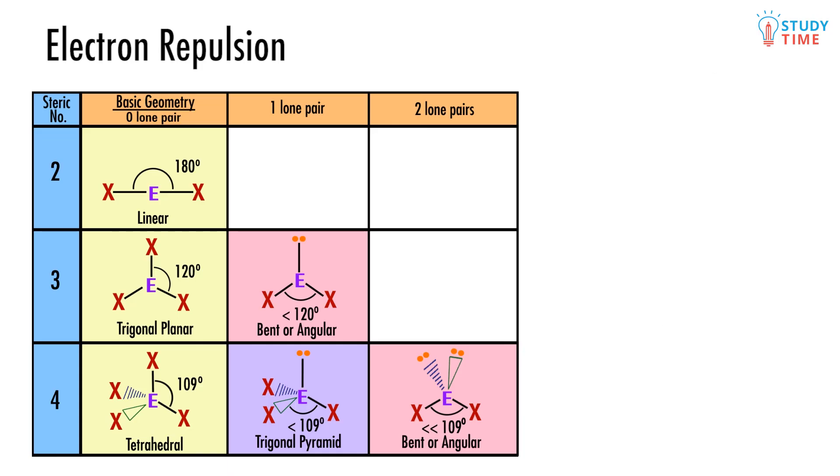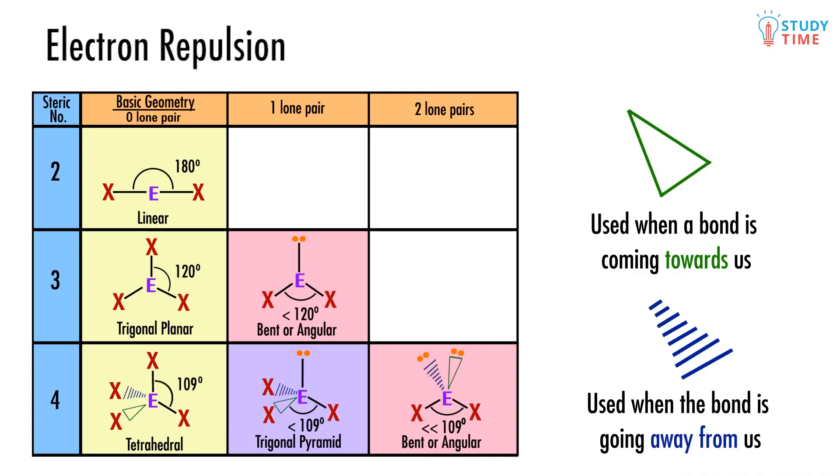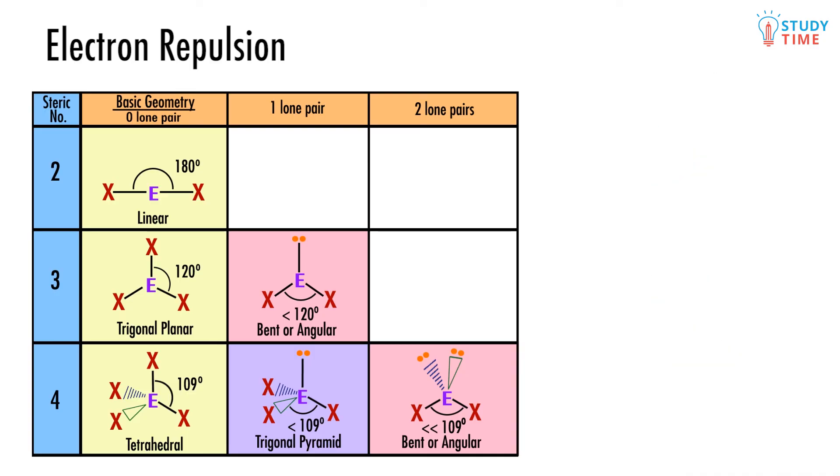Being able to draw these shapes clearly is very important for your exam. One thing you need to watch out for is how to show that some shapes are in three dimensions. For example, this line here is used when a bond is coming towards us, and this shape here for when the bond is going away from us. So the CCl4 from earlier would actually be drawn like this.